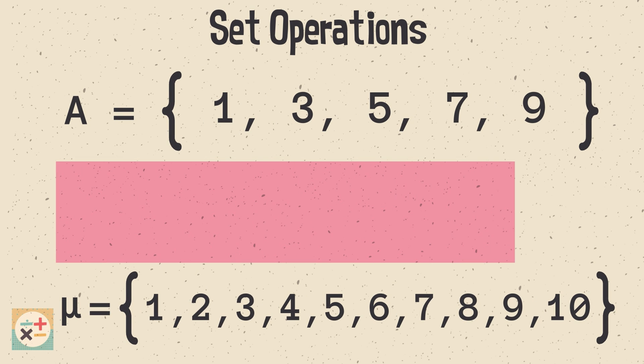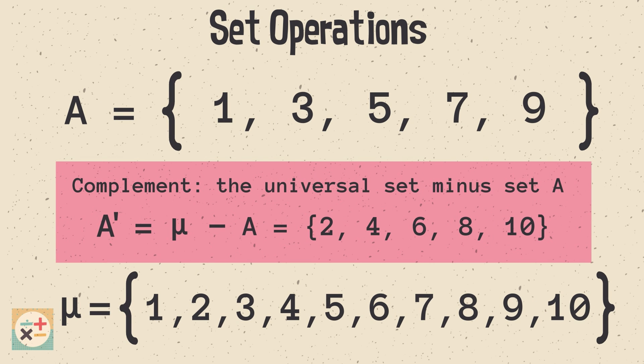Finally, we have the complement operation. Here, we need to understand what a universal set is. A universal set, often denoted as U, is a concept in set theory that represents the entire or complete set of all possible elements relevant to a particular context or problem.